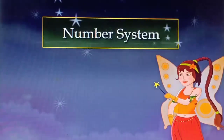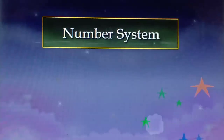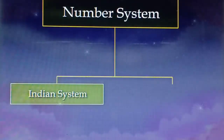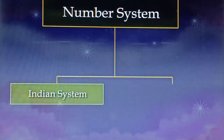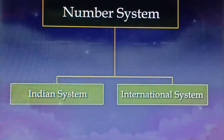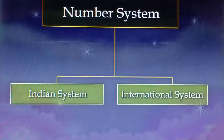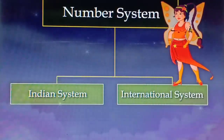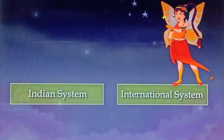There are two systems of numbering, that is, the Indian System of Numeration and the International System of Numeration. First, we will study about the Indian System of Numeration.